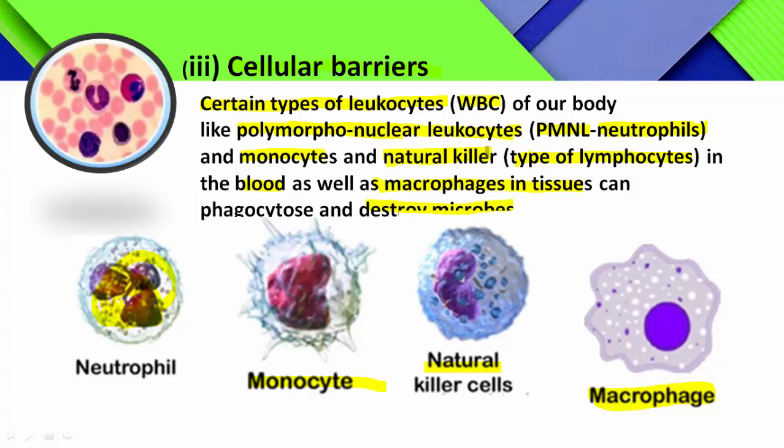All these are the structures which are providing defense against the microbe if it enters into the blood. Remember: cellular barriers are represented by different types of leukocytes such as PMNL neutrophils, monocytes, and natural killers, which are a type of lymphocytes. Macrophages are contributed by body tissue.